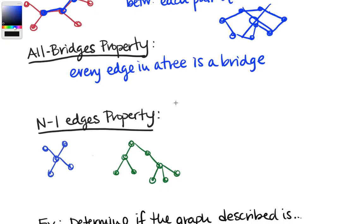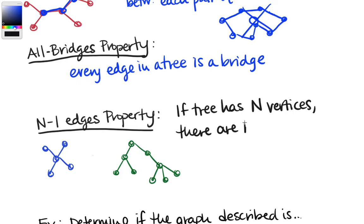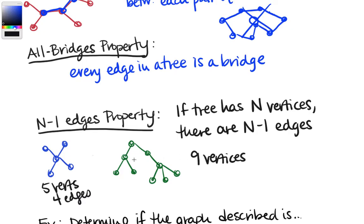The n minus one edges property: if a tree has n vertices, it has n minus one edges. We can verify this — one example has five vertices and four edges; another has nine vertices and eight edges. If we were to add that nth edge, it would have to connect two vertices that are already connected, creating a circuit. So there are always n vertices and n minus one edges.